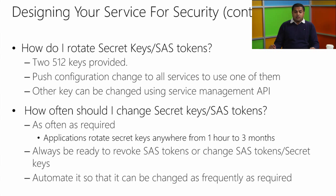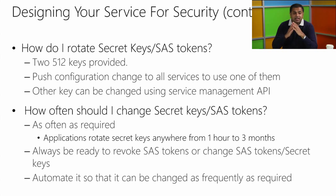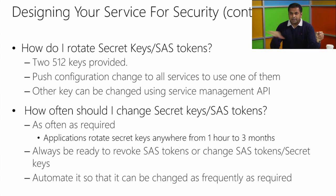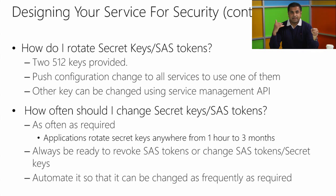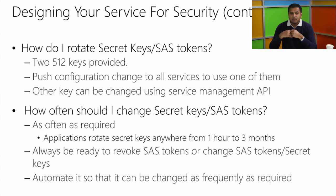How do you rotate secret keys? You get two 512-bit keys. You push one key to all your applications and config files. Since the second key is not being used, you can then rotate it. Whenever you need to rotate the first one, push the second one and then rotate the first. You ping-pong between the two secret keys, always rotating the other one using a service management API. For SAS tokens and how frequently to change them — as often as possible, and automate it.